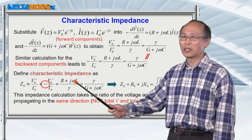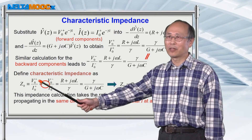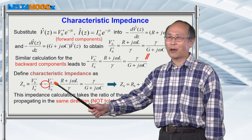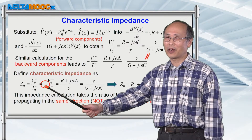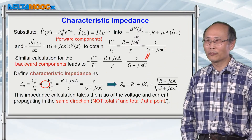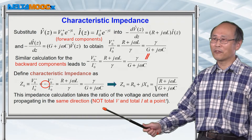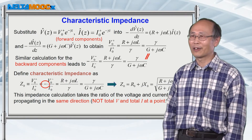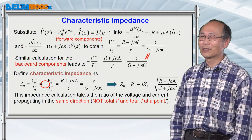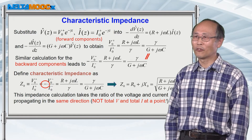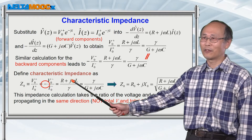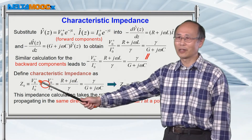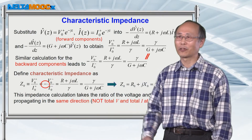When we do this definition, we pick up the forward voltage over forward current, or the backward voltage over backward current with a minus sign. We did not use the total voltage over the total current. So be careful about the definition of this characteristic impedance. Later on, when we define the load impedance, we'll be using the total current and also total voltage in the calculation. For this characteristic impedance, we only use one component, either in the forward direction or backward direction.